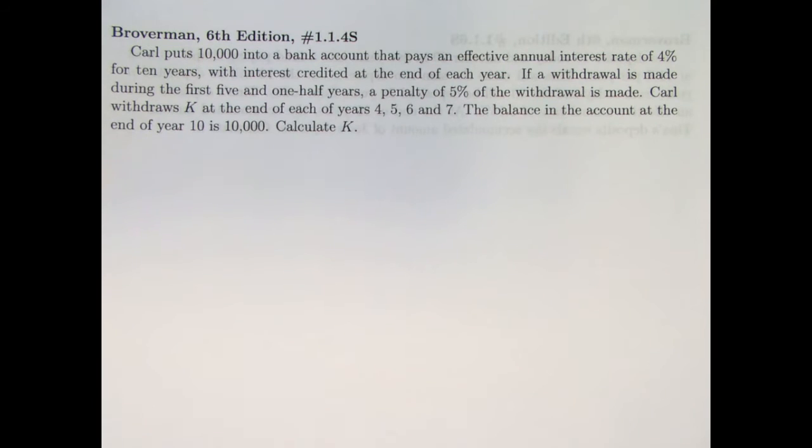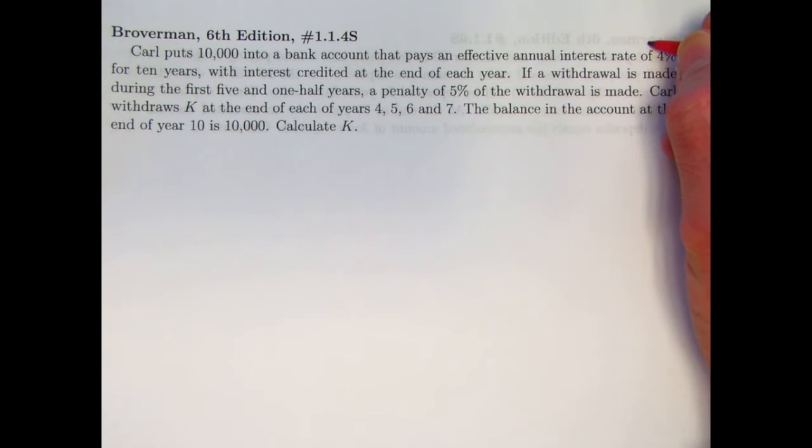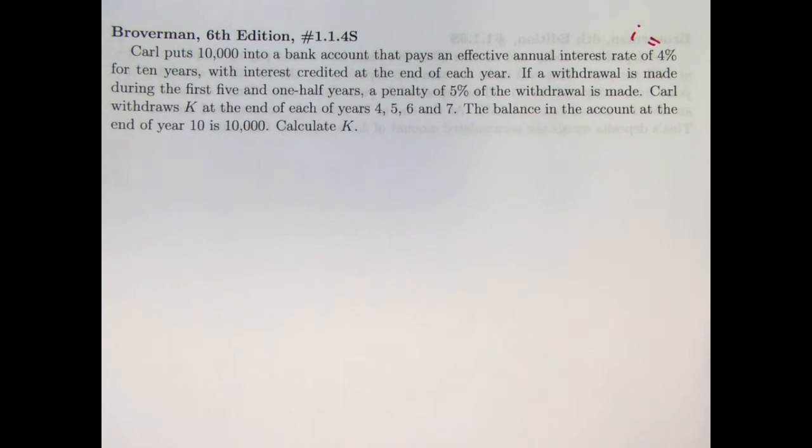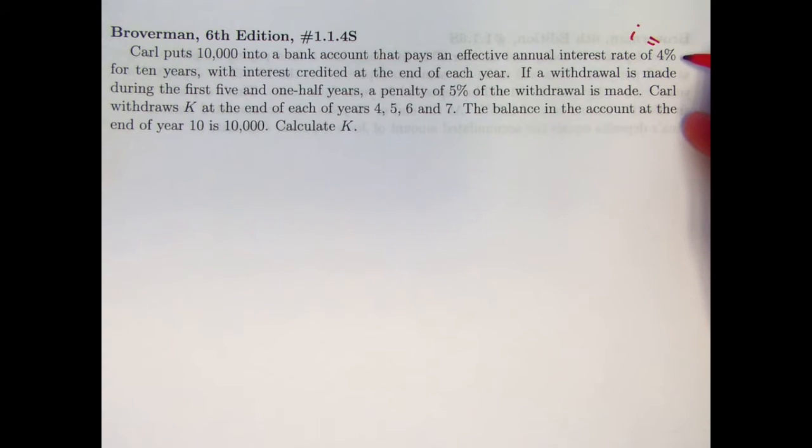Carl puts $10,000, you know, it could be dollars, could be euros, it doesn't matter. It's an amount of money into a bank account that pays an effective annual interest rate of 4%. Okay, let's stop there for a second. That 4% in Actuarial Notation is typically labeled with the letter I, I standing for interest rate. It's not the same as the imaginary unit by any means. 4% means 4 hundredths or 0.04, and when you plug it into your calculator, that's how you'll typically plug it in.